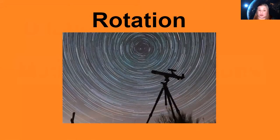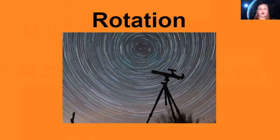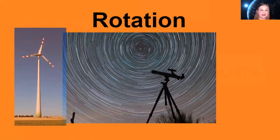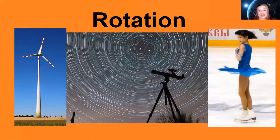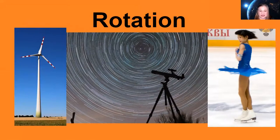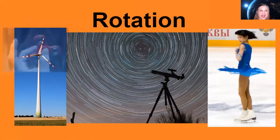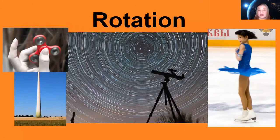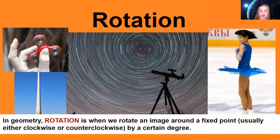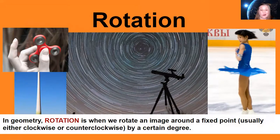Moving on to rotation and again it'll probably be what you think of as rotation. We know that planets rotate and so here we have a beautiful picture that appears like the stars are rotating around a fixed point. Windmills also rotate and ice skaters. I always love watching the ice skaters where they do the really quick turn around that fixed point and they go super fast. And even fidget spinners. These are all great examples of rotation. In geometry rotation is when we rotate an image around a fixed point either clockwise or counterclockwise by a certain degree.